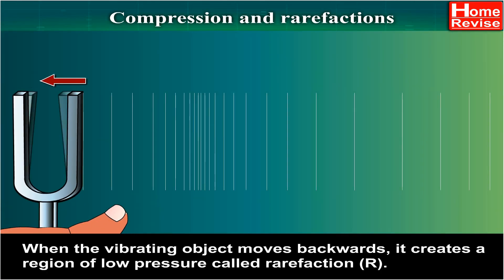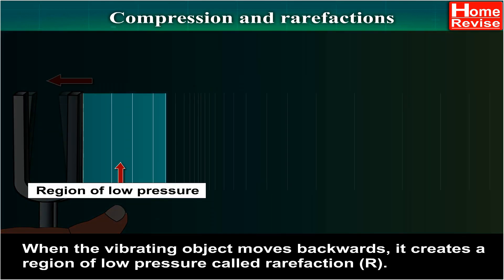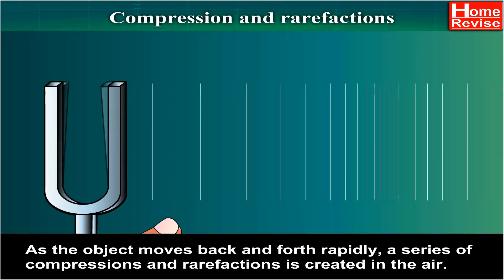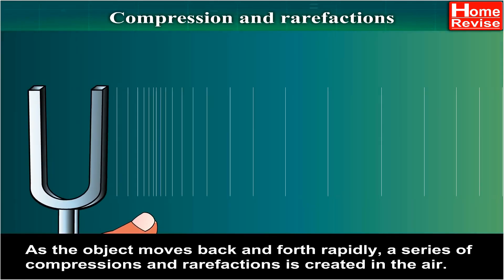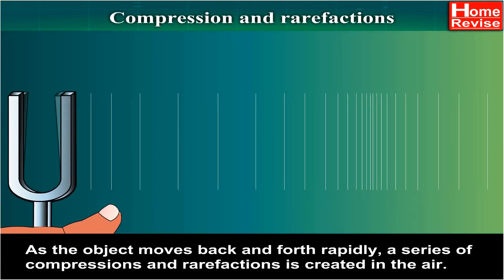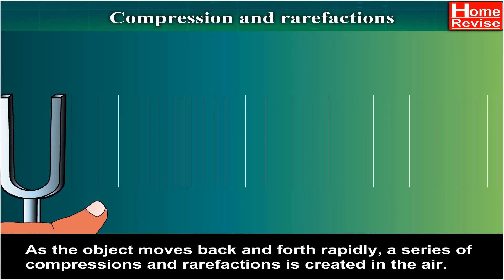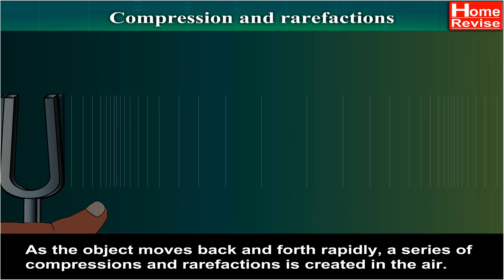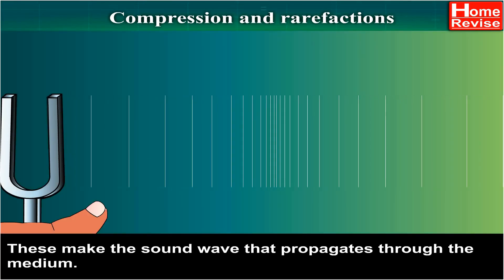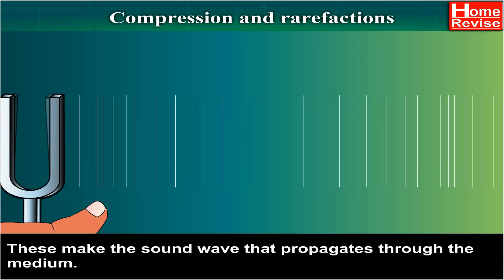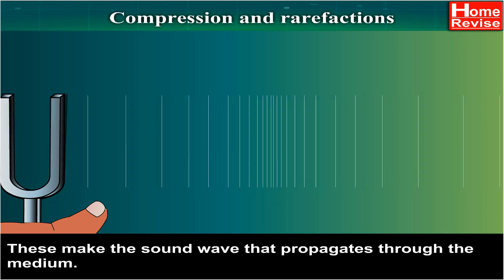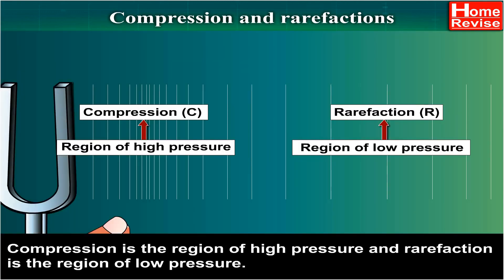When the vibrating object moves backwards, it creates a region of low pressure called a rarefaction. As the object moves back and forth rapidly, a series of compressions and rarefactions is created in the air. These make up the sound wave that propagates through the medium. Compression is the region of high pressure and rarefaction is the region of low pressure.